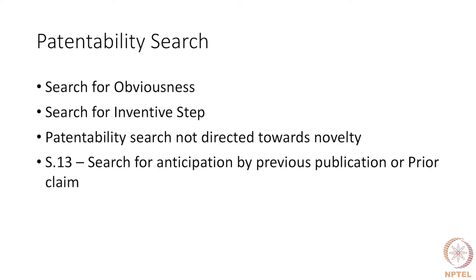There is a provision in the Indian Patents Act, Section 13, which calls for a search for anticipation by previous publication or by prior claim. In other words, this is a search done by an examiner when an application is filed. The objective of this search is to ensure that the invention as covered in a patent application has not been anticipated. So in common parlance, when you talk about a search, it is easy to focus on a search for novelty. But patentability searches throughout the world are directed at determining whether there is inventive step — whether the invention is obvious or not.